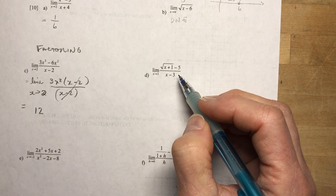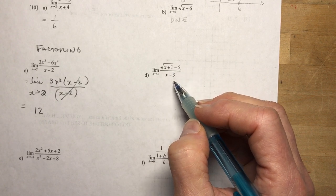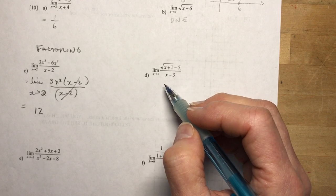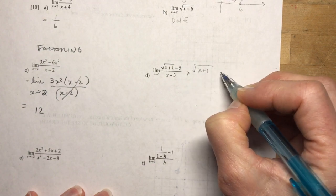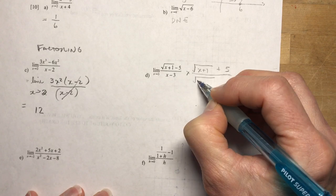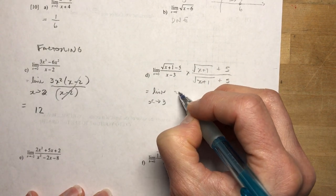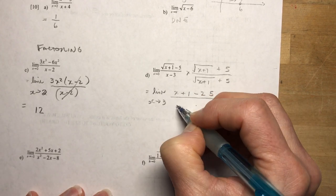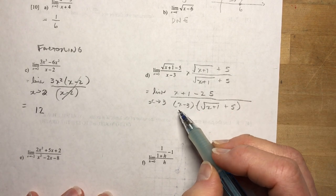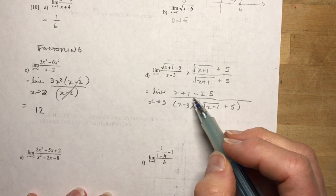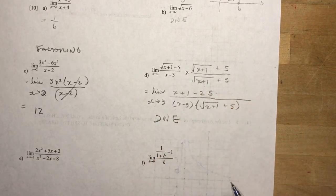The limit as x→3 of (√(x+1) − 5)/(x−3): plugging in 3 gives (2−5)/0 = −3/0. Trying to multiply by the conjugate gives (x+1 − 25) / [(x−3)(√(x+1)+5)] = (x−24) / [(x−3)(√(x+1)+5)]. Since (x−24) is not divisible by (x−3), there's no cancellation possible. The limit does not exist.